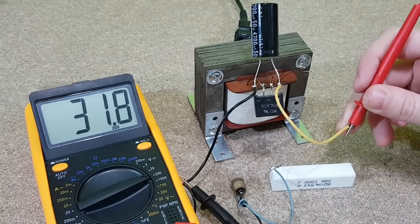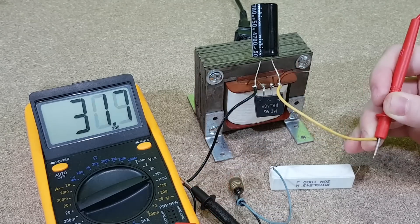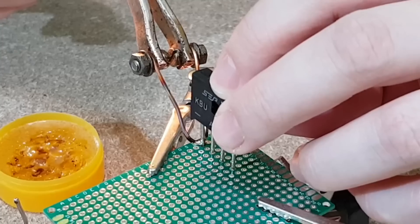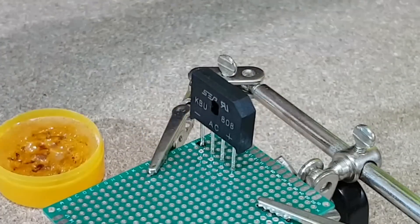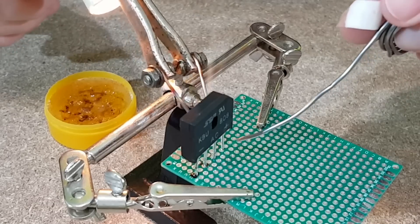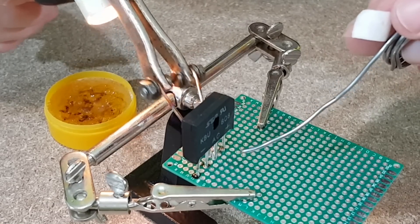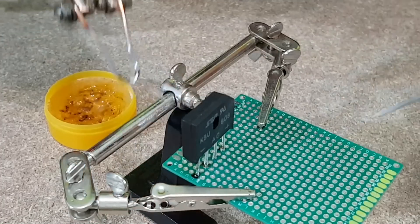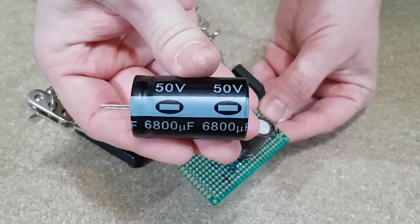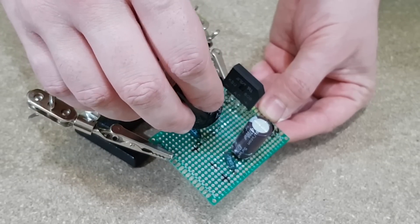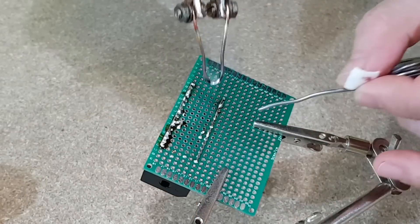The transformer works with alternative current. To be useful for my project I need to convert it into direct current. So I will make a circuit board with two bridge rectifiers. The first one is for the 32 volts DC output. I will solder a bridge rectifier of 8 amps. To filter the output voltage I need the big electrolytic capacitor connected in parallel. I think this one is good enough. And an 82 kilo ohms resistor to slowly discharge the capacitor after the power supply is turned off.